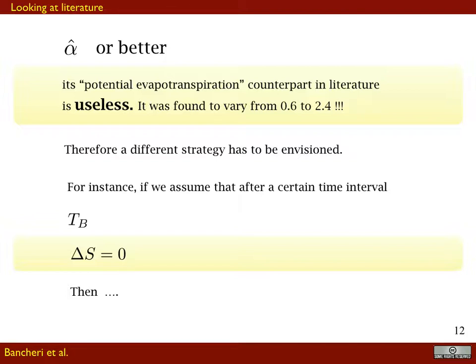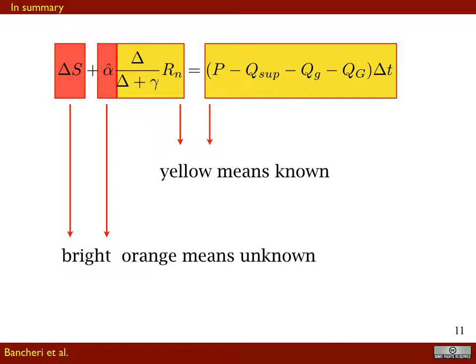One could think to estimate alpha from literature, but the literature usually refers to the concept of potential evapotranspiration while here we are estimating actual evapotranspiration. In any case, this value in literature varies from 0.6 to 2.4 — a factor of four — which makes using literature values quite useless for determining this coefficient.